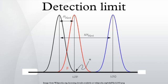In analytical chemistry, the detection limit, lower limit of detection, or LOD, is the lowest quantity of a substance that can be distinguished from the absence of that substance within a stated confidence limit.